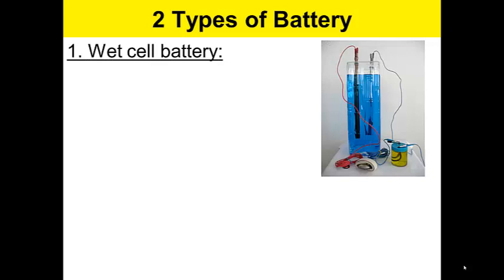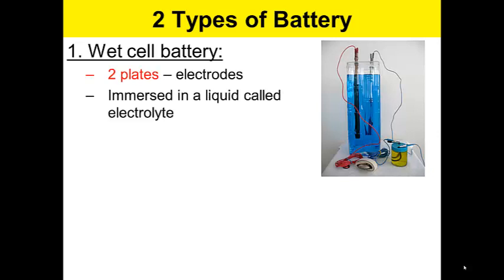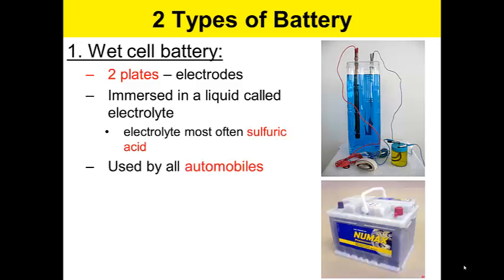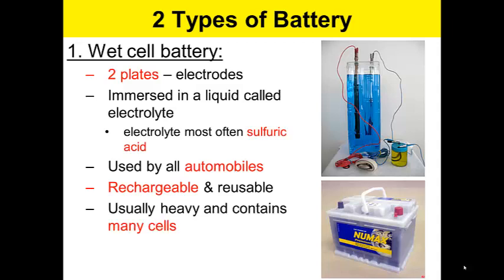There are two types of batteries. One is a wet cell battery. It contains two plates or electrodes immersed in a liquid called an electrolyte. An electrolyte most often is sulfuric acid, especially in things like car batteries. It's used by all automobiles. Wet cell batteries are both rechargeable and reusable. They usually are heavy and contain many different cells.